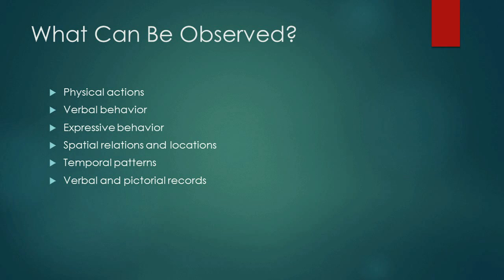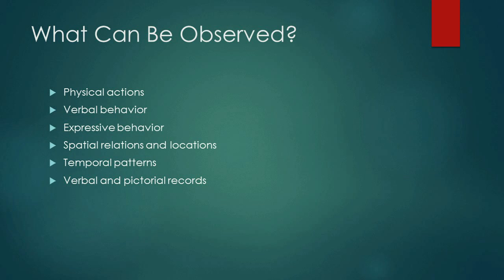What can be observed? Generally, we can break it down into a number of key categories. Physical actions, such as people's expressions and movements. Verbal behavior — for example, if I'm really loud, that would be a good example of verbal behavior. Expressive behavior. Spatial relations — if I'm up in your face, you're going to be upset. We look at how far people are from one another, how close one thing is to another. That's observable.